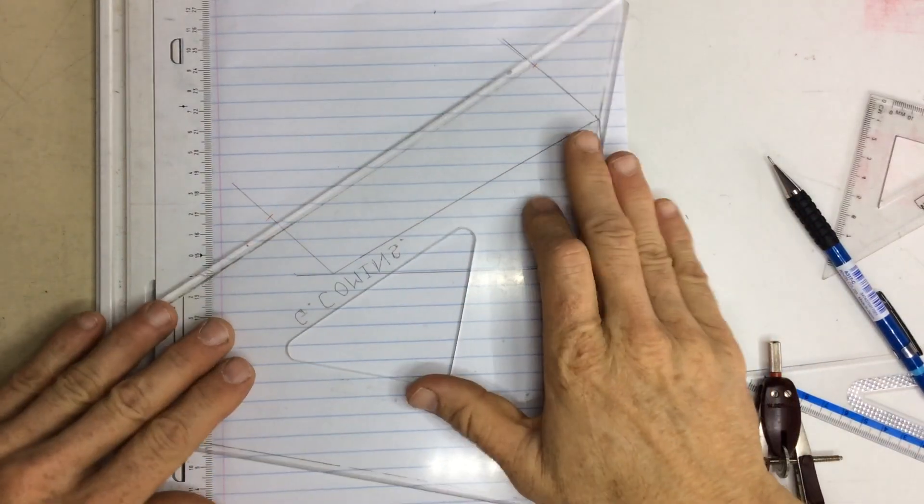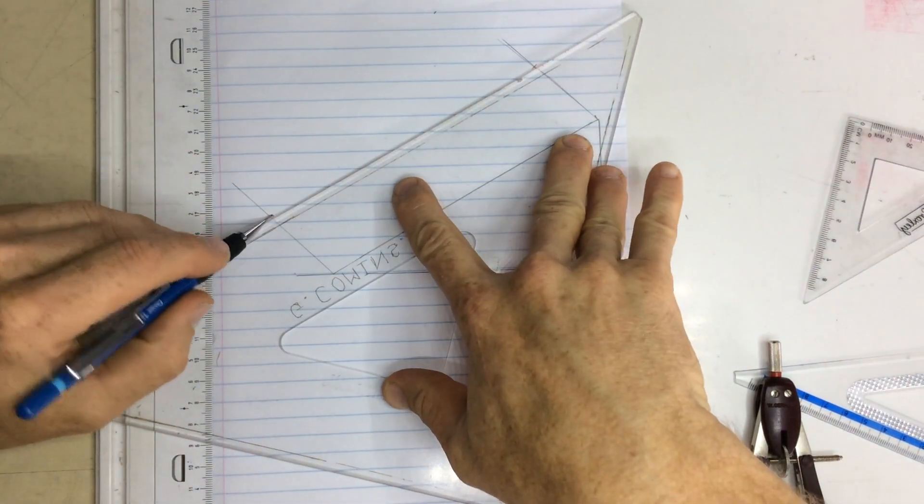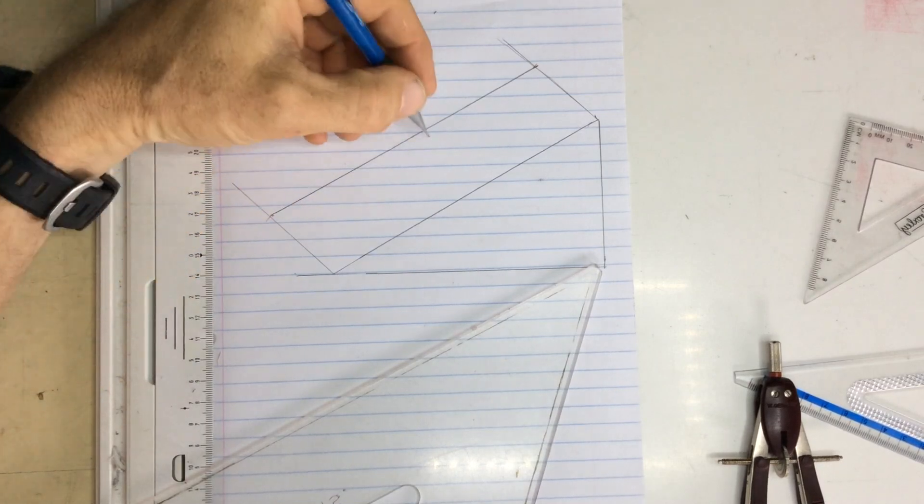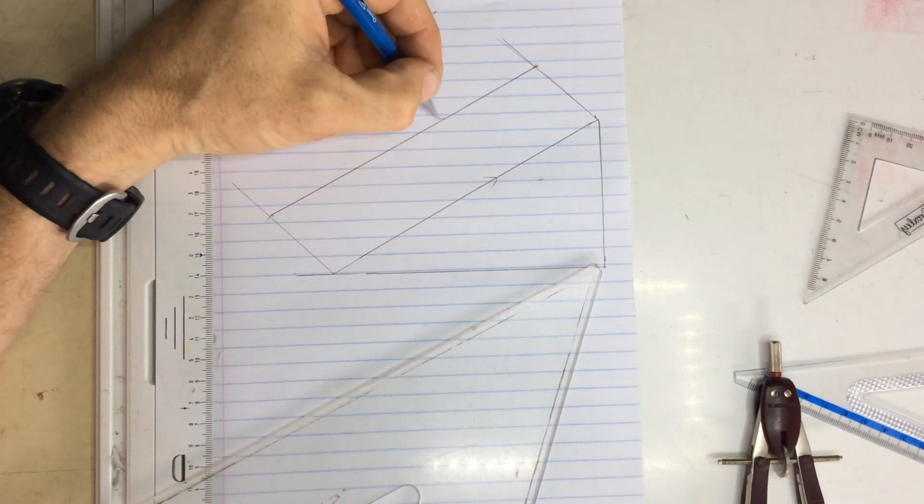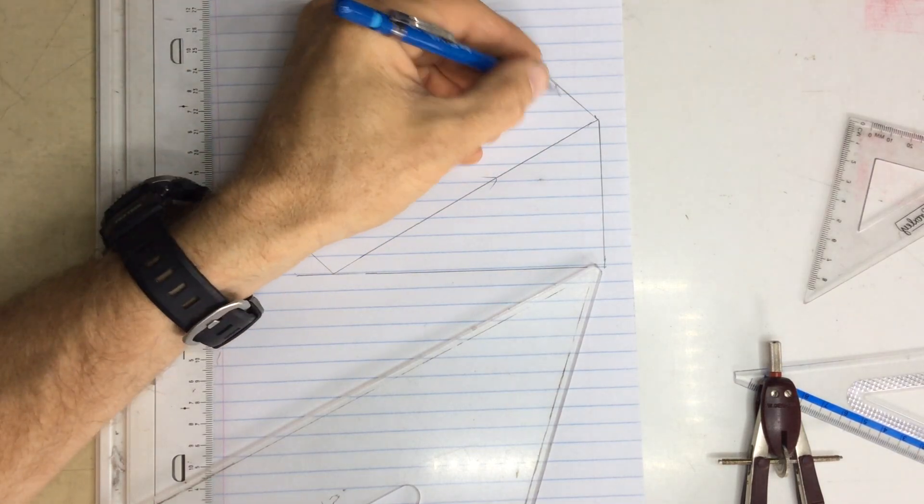Once I've got that, I can then draw a line which is going to come down from that mark at the top to the mark at the bottom. And you'll see that I've got two lines that are parallel to each other there. And I've got two lines that are parallel to each other there.